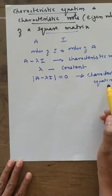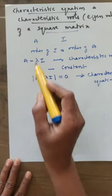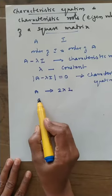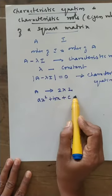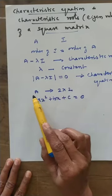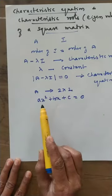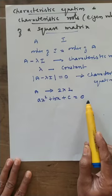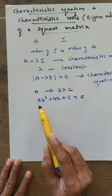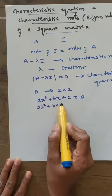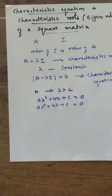This characteristic equation is in the form of lambda. If A is a square matrix of order 2 cross 2, then the characteristic equation is of the form A lambda squared plus B lambda plus C equals zero.